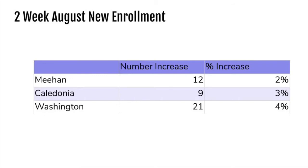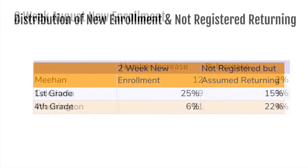Caledonia, Meehan, and Washington, for example, are being impacted the most this year, as their registrations have increased by 2%, 3%, and 4% just in the last two weeks. The new enrollments also impact grade levels differently. Most of our new enrollments in the last week have been in first grade, and hardly any are in fourth grade.